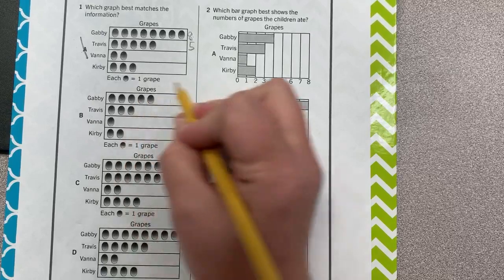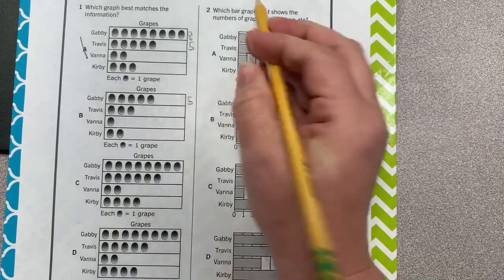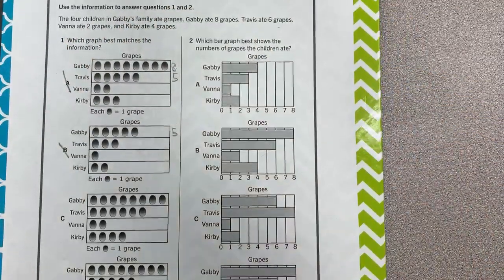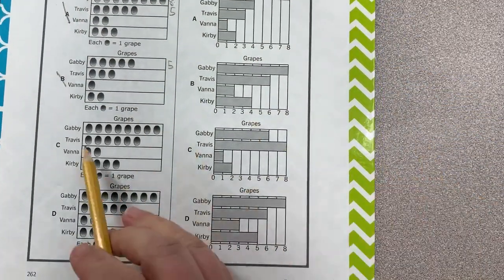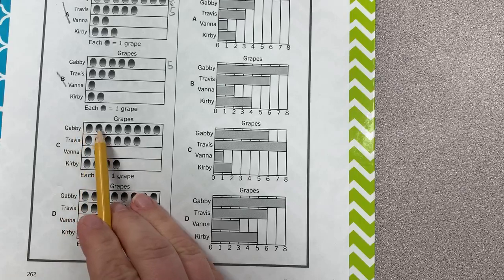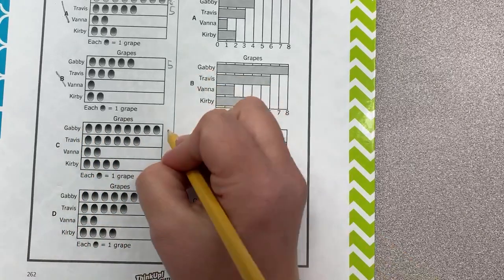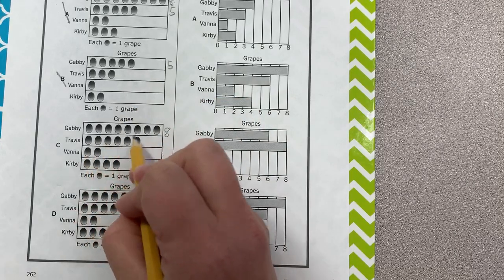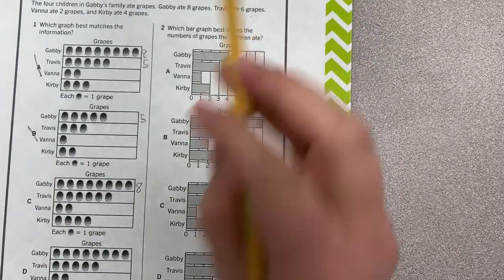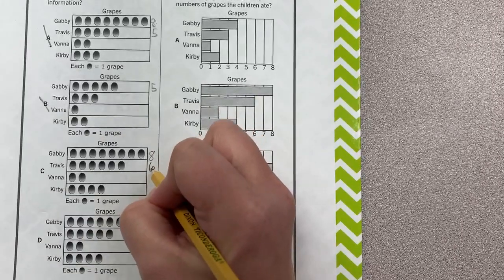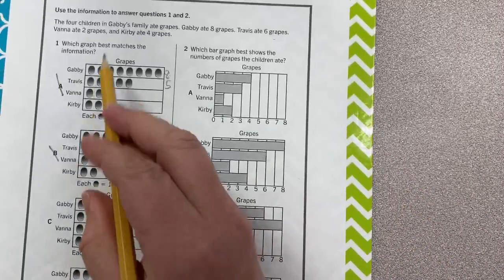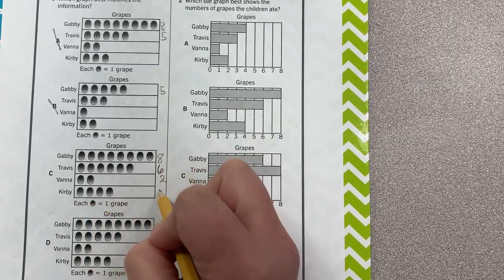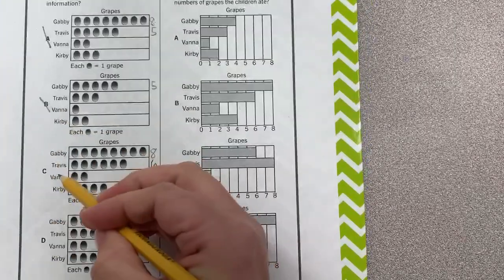Okay, let's check out B. One, two, three, four, five. Five. No. Gabby ate eight. That can't be right. Let's look at this third graph. One, two, three, four, five, six, seven, eight. Okay, that's correct so far. One, two, three, four, five, six for Travis. Yes, we got that correct. Good. Vanna, one, two. Two for Vanna. Kirby, one, two, three, four. Four. Okay, this matches.